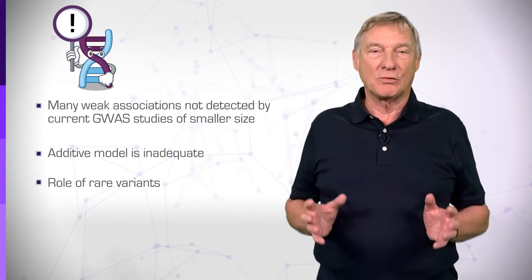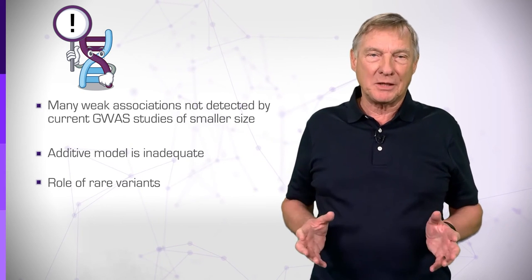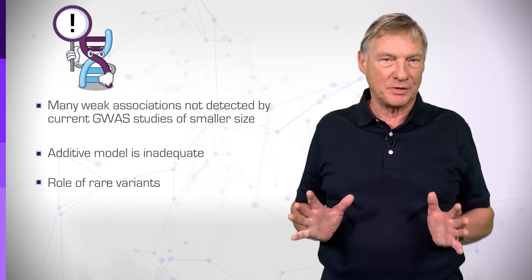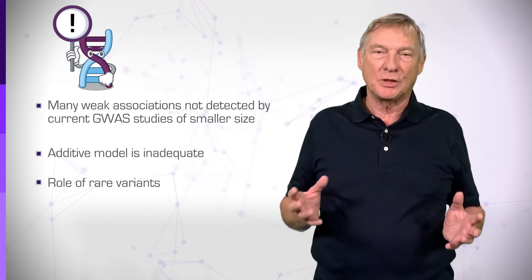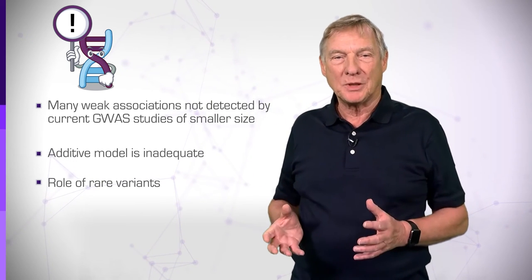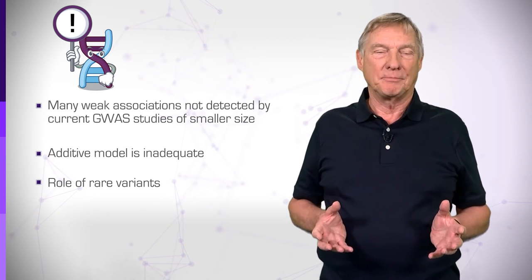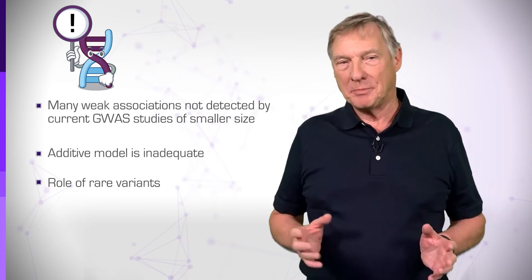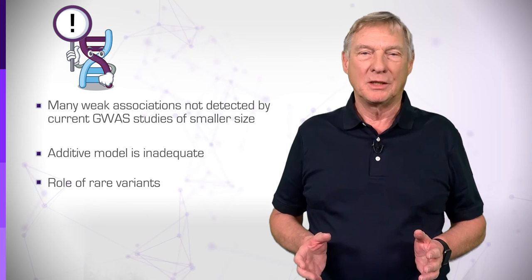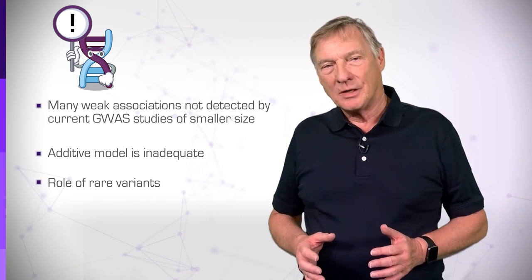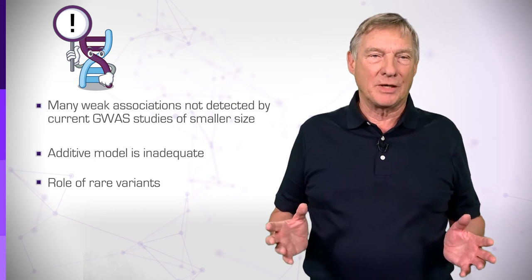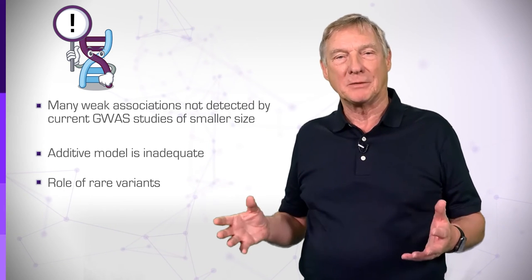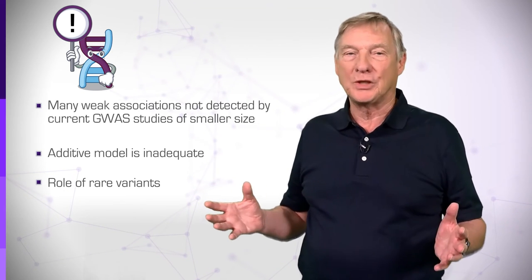Yet a third potential factor is the role of rare variants. In order to provide an adequate statistical signal, GWAS typically requires variants to be of 1% or higher frequency in the reference population. Since the majority of variants are rare, a relationship to a disease cannot be detected with this technology. Exome sequencing directly finds all rare and common variants in coding regions and is beginning to supplant microarray-type technology, but it is still relatively expensive. Results so far on the role of rare variants are ambiguous, partly due to limited coverage of expression variants in typical exome sequence, and so full genome sequence is really needed.